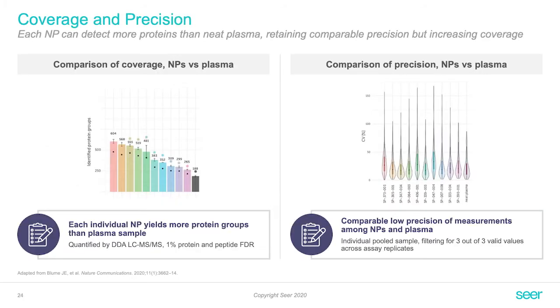Looking at the performance of individual nanoparticles on the left hand side, we see that the best particle gets you more than 3x the number of protein IDs compared to neat plasma. Importantly, that does not compromise precision, measured as coefficient of variation. This is particularly important since we are quantifying very low abundant proteins, and the automation provided by the Proteograph simplifies this complexity without compromising precision while giving much higher depth.